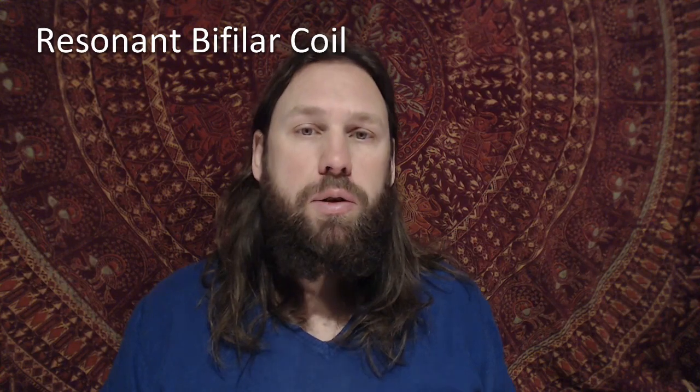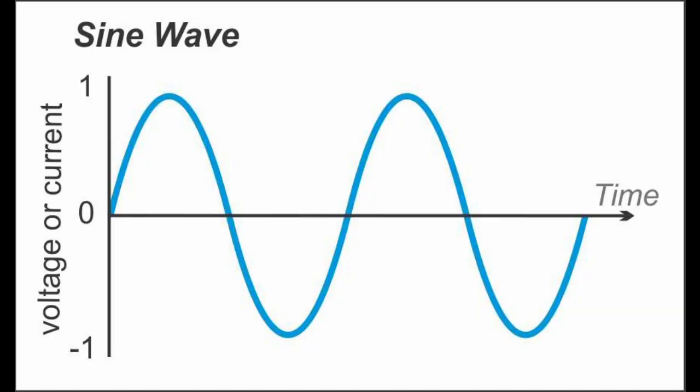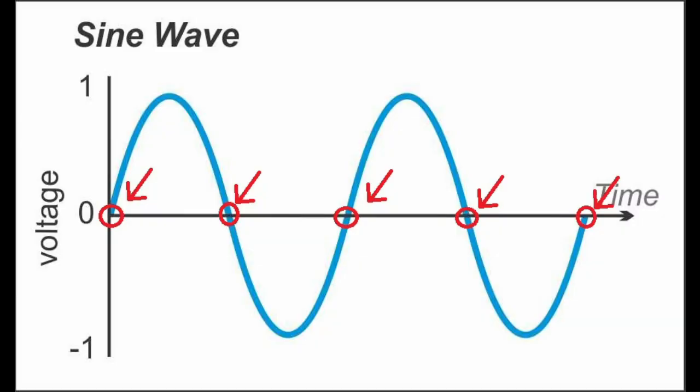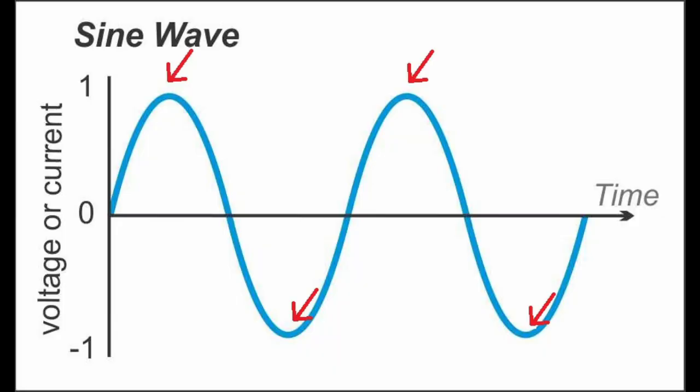We can now apply this knowledge to a resonant bifilar coil. A resonant bifilar coil shows a sine wave, and the sine wave on the oscilloscope is a representative of the dielectric field strength. When the voltage is zero, the magnetic field must be at maximum, because all the energy of the dielectric field is transformed into the magnetic field energy. Energy can't be produced — it can only be transformed. So voltage being zero doesn't mean there is no energy; it means the energy is transformed into the magnetic field. And vice versa, when the voltage is maximum, the magnetic field energy is zero.